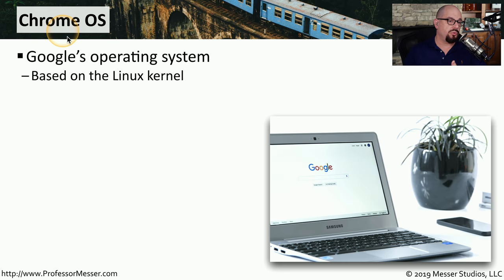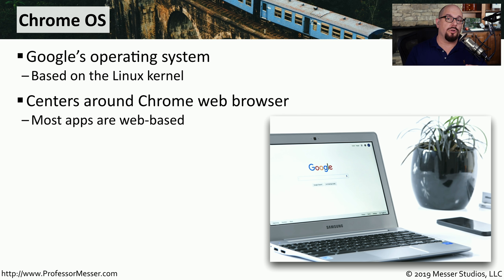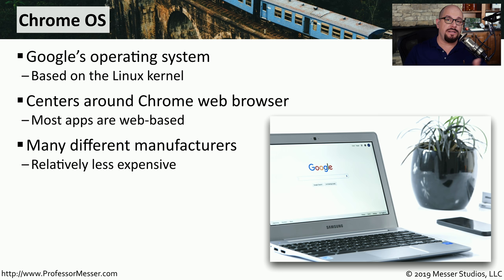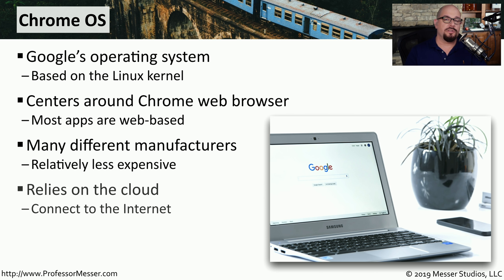Google also has their own operating system called Chrome OS, based on the Linux kernel. This operating system focuses around the Chrome web browser, and most of the apps you'll use on Chrome OS run from inside that browser. This relatively simple approach means many different manufacturers can create hardware that will run Chrome OS, and since the operating system is less demanding, the hardware is less expensive. Because many apps run in the browser, there's a strong reliance on the cloud, so you need a good internet connection to run many of the apps available in Chrome OS.